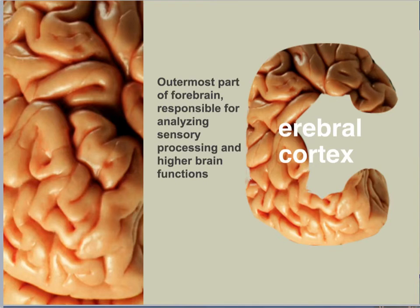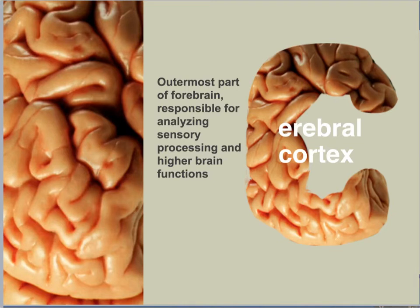We've finally made it to the telencephalon — the outermost part of our forebrain — responsible for analyzing sensory processing and higher brain functions such as thinking and decision-making. It is the largest division of the human brain, mediating the brain's most complex functions: initiating voluntary movement, interpreting sensory input, and mediating complex cognitive processes such as learning, speaking, and problem solving.